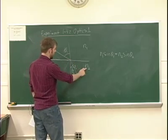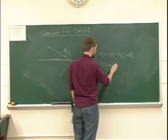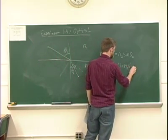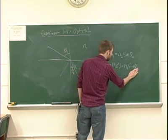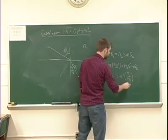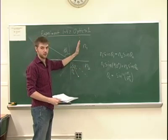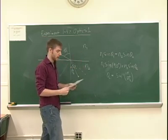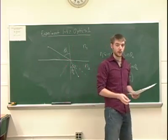Since N2 is larger than N1, at the critical angle you have N1 times sine of 90 degrees equal to N2 times sine of θ_critical. Since sine of 90 degrees is 1, the critical angle θ_C equals the inverse sine of N1 over N2. This cannot occur the other way around. You can only have total internal reflection going from a material with a larger index of refraction to one with a smaller index — not the other way around. That's why fiber optics are made from glass fiber.